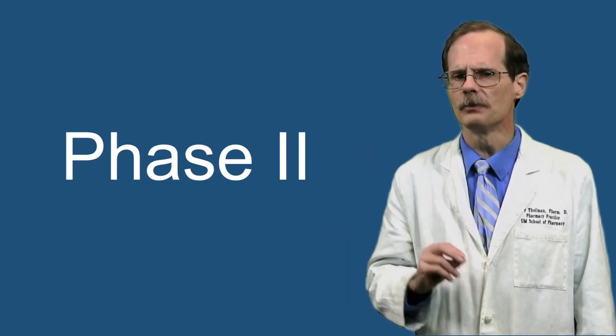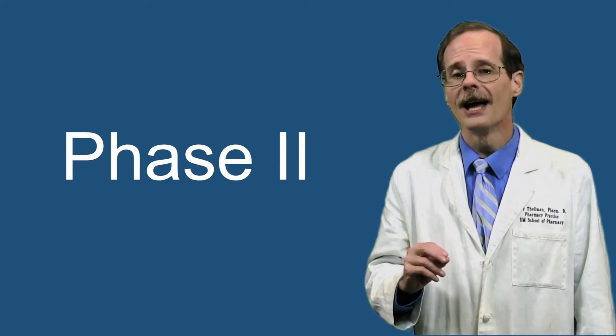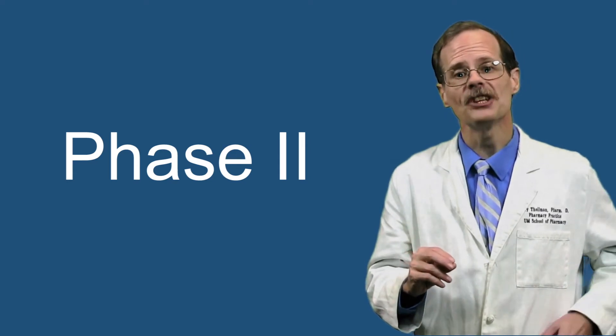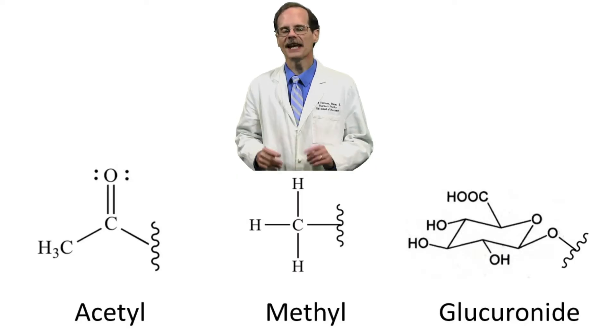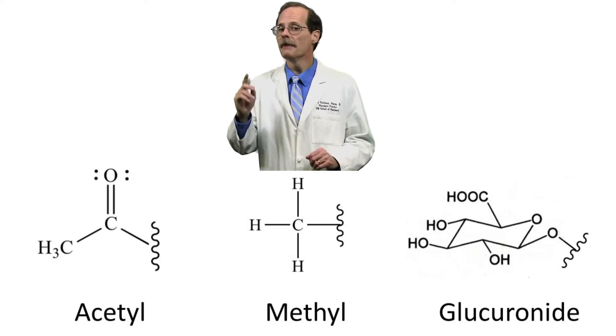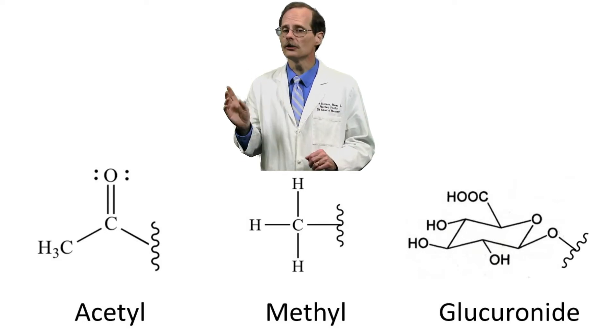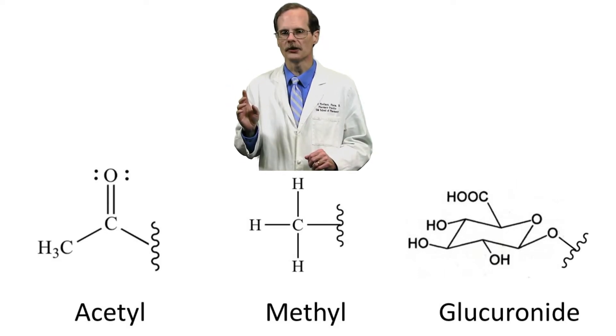Phase II reactions involve the liver trying to make the drug molecules more soluble by attaching another molecule to them. By attaching a polar acetyl group, methyl group, or glucuronide moiety to the drug molecule, the positive and negative charges on the drug are separated further, making the drug more water-soluble.